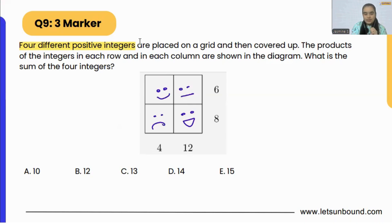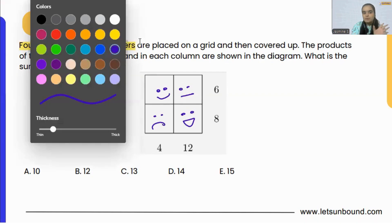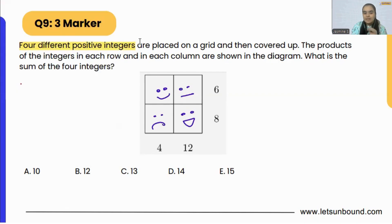So what we can do is we can start with the smallest number. In such types of grids, in such types of problems, we are always going to start with the smallest number, that is four. Because if we split four...